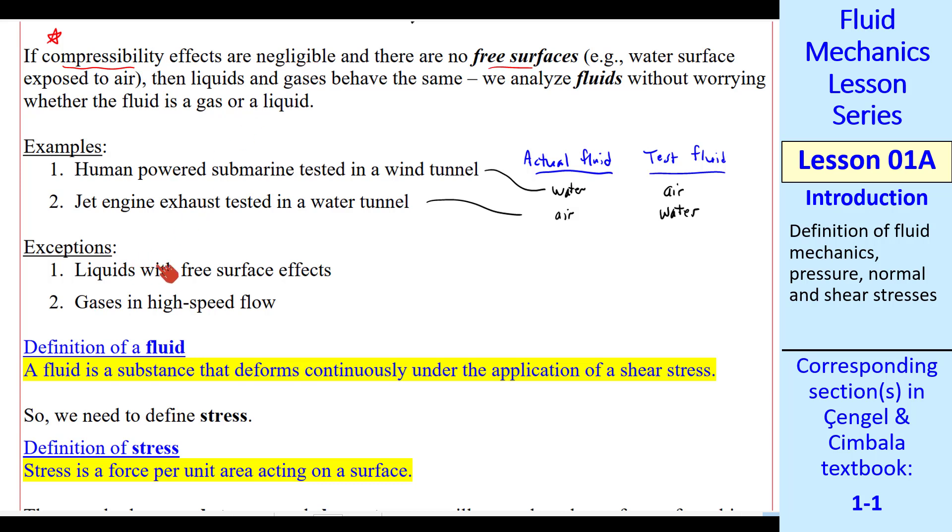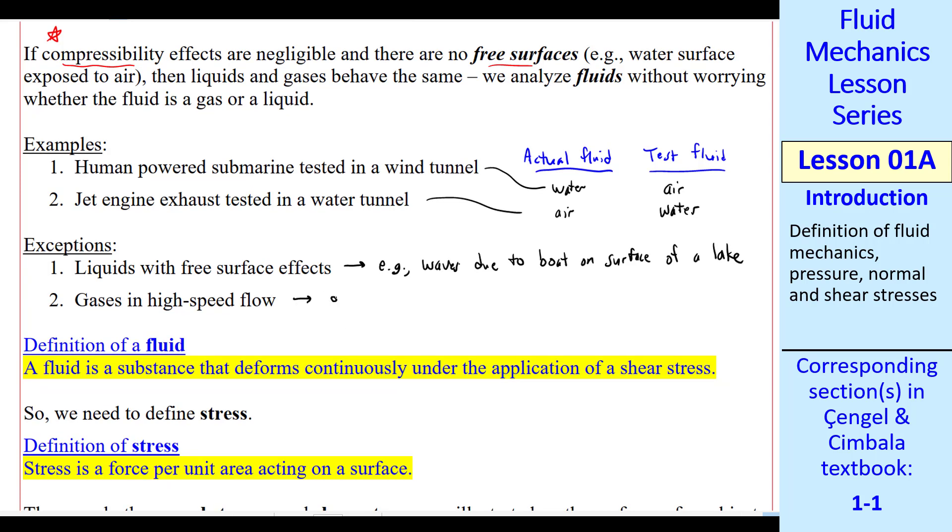As I mentioned, these are the exceptions. Liquids with a free surface and gases in high-speed flow. For free surface effects, this would, for example, be waves generated by a boat on the surface of a lake. Gases in high-speed flow would be, for example, rockets, where compressibility effects are significant. You can't model this case with air, and you can't model this case with water.